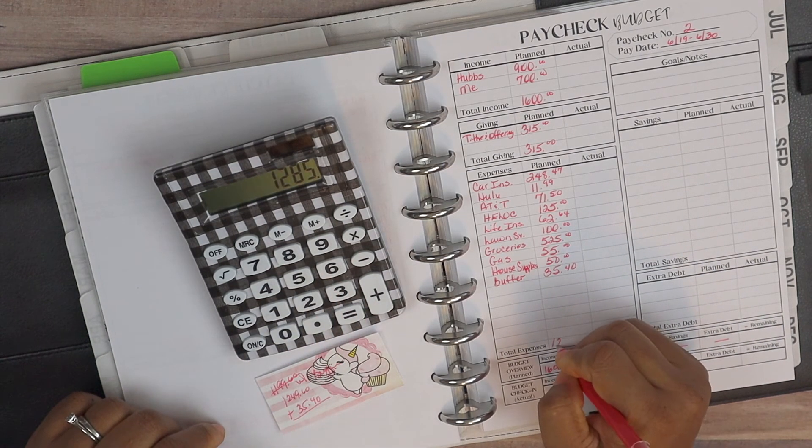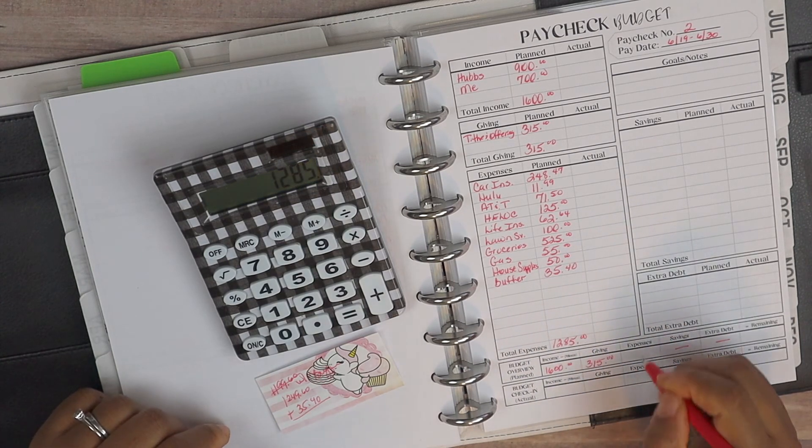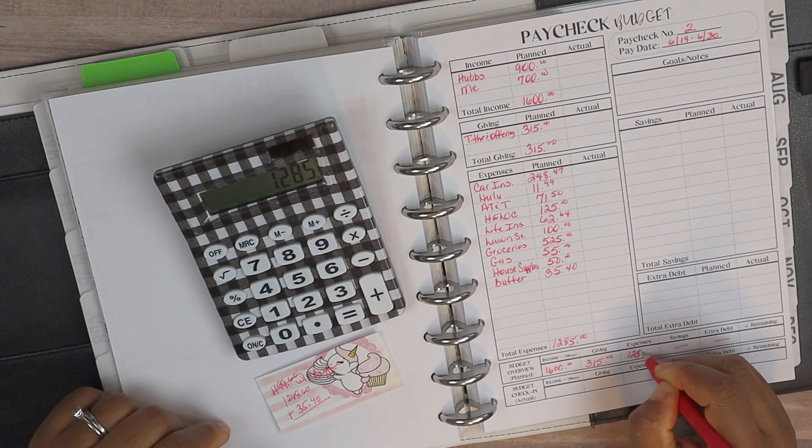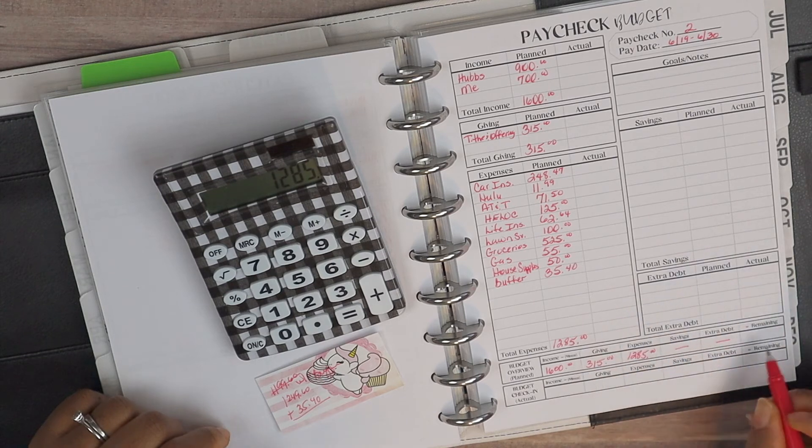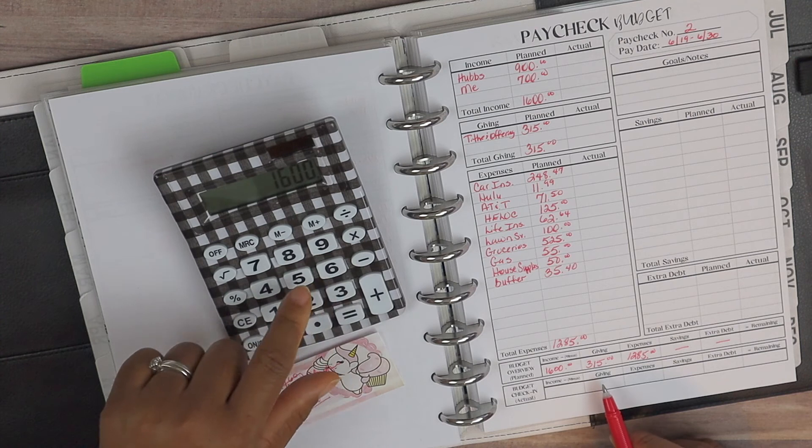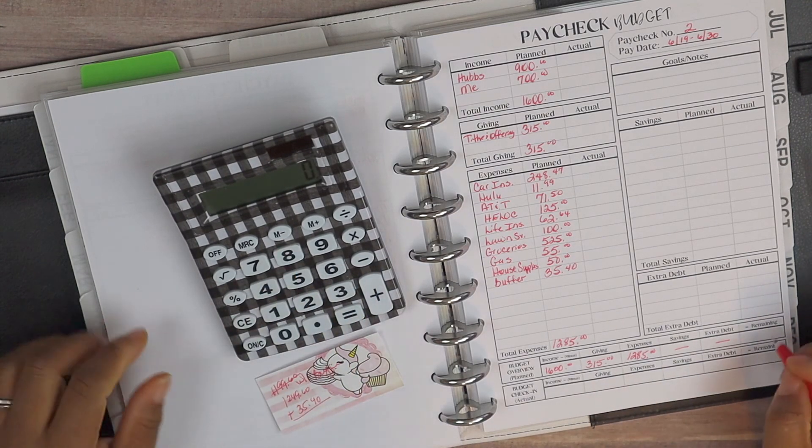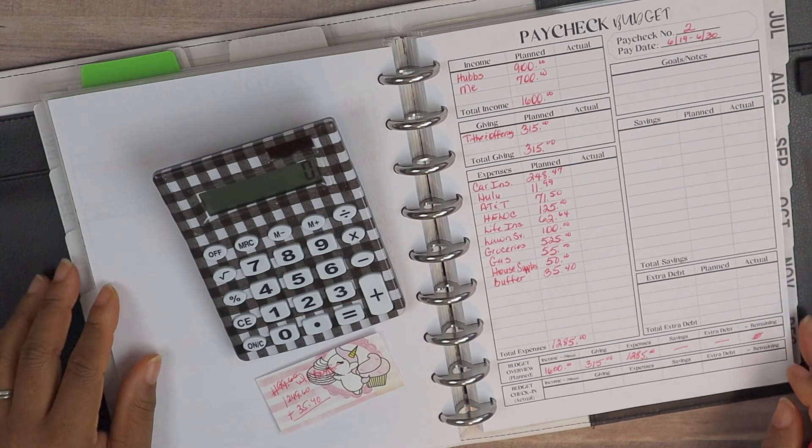Oh, it's a lot of calculations going on, a lot going on in the brain. Alright guys, so $1249.60 plus $35.40, so our total plan expenses come to $1285. And then we should have zero remaining. So $1600 minus $315 and then minus $1285. Yep, that gives us a zero base budget, which is awesome.